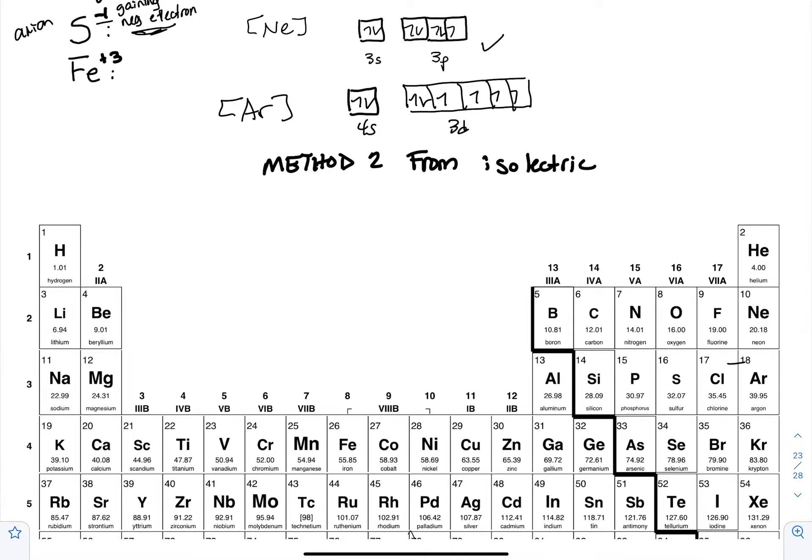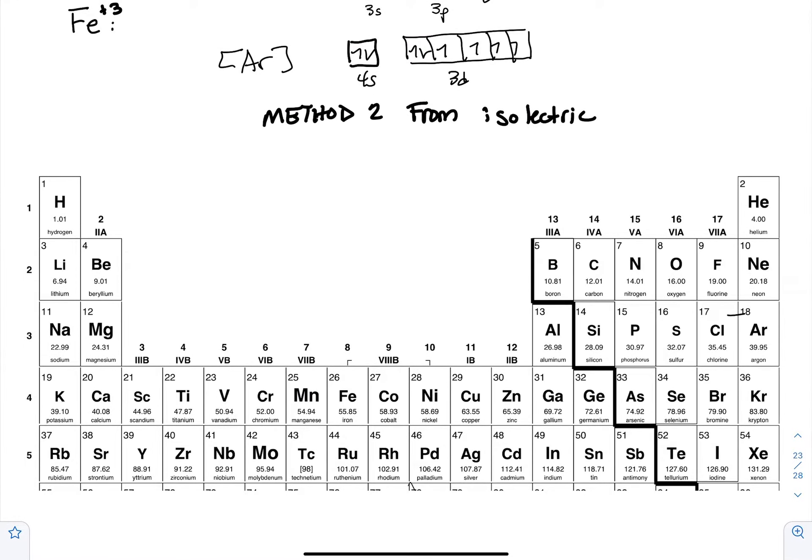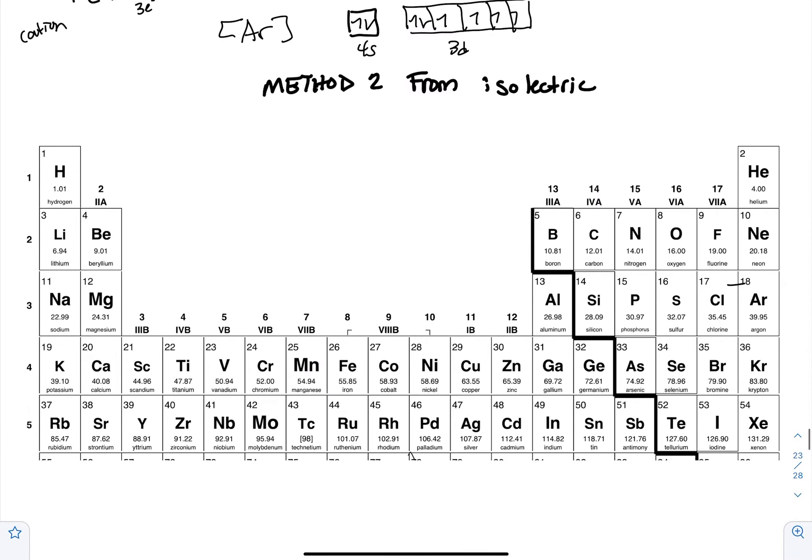All right, so you have to be really careful with iron positive three. We already have a neutral configuration from earlier. Positive three means that you are losing electrons. In this case, you are losing three electrons. That is a cation, so we will just remove them.